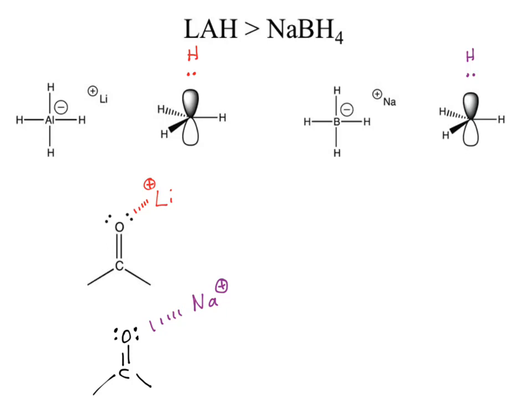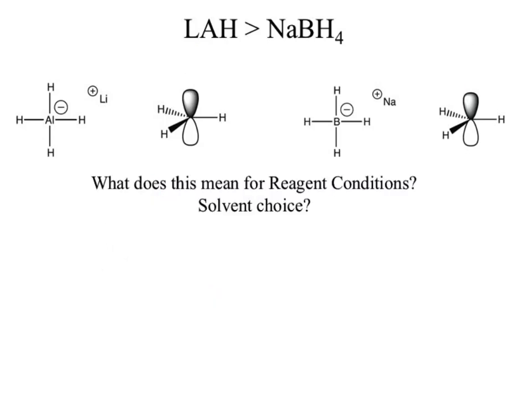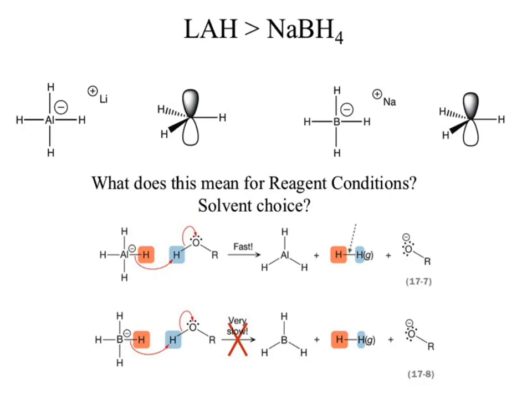Lithium aluminum hydride generates a stronger H⁻ than sodium borohydride — that's what you absolutely have to remember when thinking about using these reagents with carbonyls. If lithium aluminum hydride generates a strong H⁻, what could that H⁻ react with? Acidic hydrogens floating around in solution — and those hydrogens don't have to be very acidic because the H⁻ associated with LAH is so strongly negative.